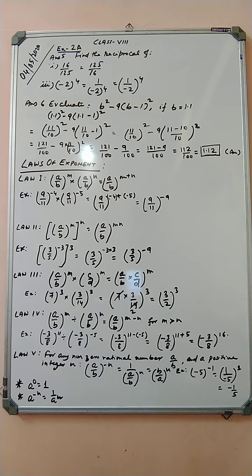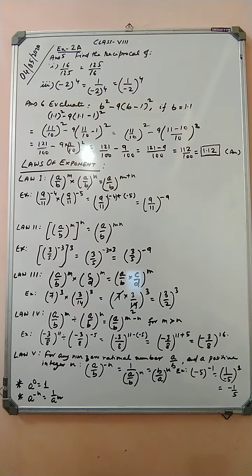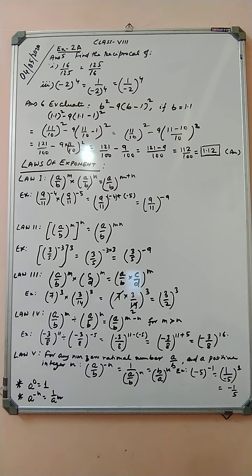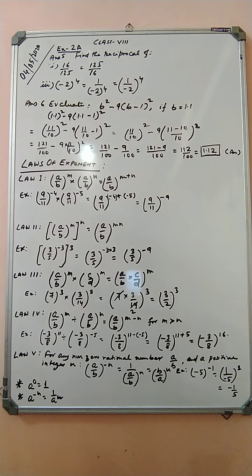Reciprocal means just the opposite, so it can be written as 125 by 16 — this goes up and this goes down. Part three: minus two to the power four can be written as 1 by minus two to the power four, which is also 1 by minus two to the whole power four, because 1 to the power four is 1 only.